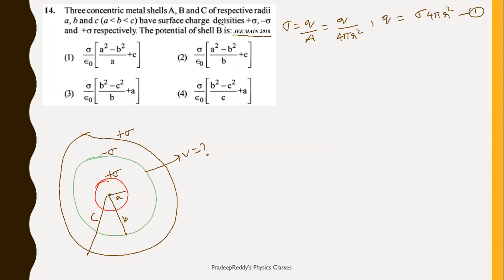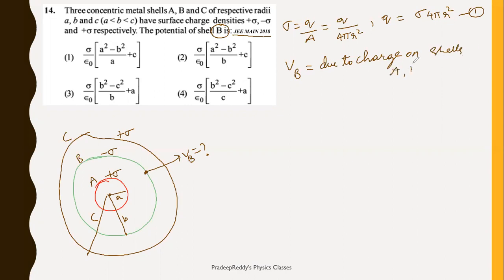We want to find the electric potential on shell B. Shell B is outside shell A and inside shell C. Since potential is a scalar quantity, we add the potentials due to all three shells: potential due to A, due to B, and due to C. Let the charges be QA, QB, and QC on shells A, B, and C respectively.